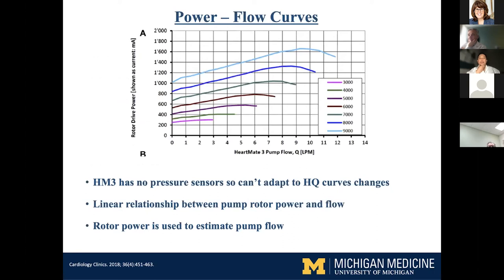The relationship between pump power and flow is more or less linear. The HeartMate 3, like none of the VADs so far, is able to adjust speed to maintain flow because there are no pressure sensors — you can't really adapt it in real time. The speed you set is the speed you get; you need to manage everything else in terms of preload, afterload, and pressure.